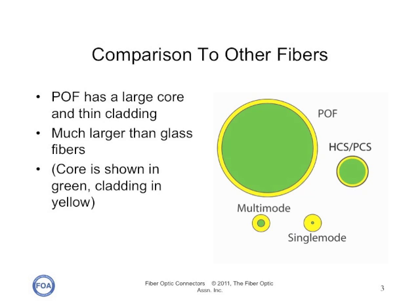This slide shows the typical size comparisons for both glass and plastic fibers. A multimode fiber has a core diameter of about 50 microns and an outside diameter of 125 microns. Single-mode fiber has a core diameter of slightly less than 10 microns and an outside diameter of 125 microns also. A typical POF fiber, which we call a one-millimeter fiber, has a core diameter of about 950 microns and a cladding outside diameter of about one millimeter — so it's much, much larger fiber.